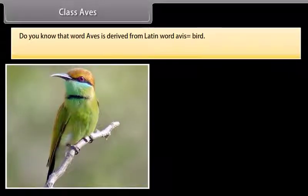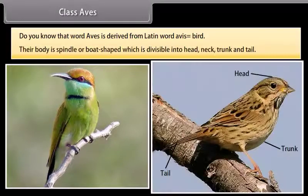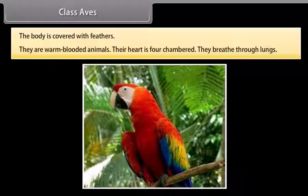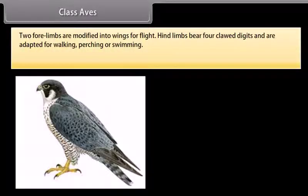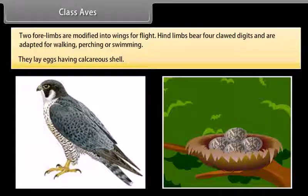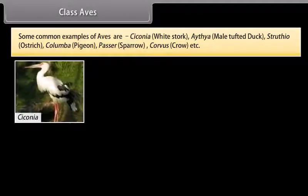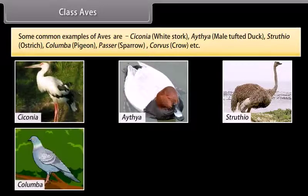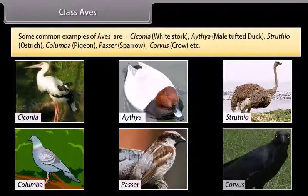Class Aves. The word Aves is derived from Latin word avis, meaning bird. Their body is spindle or boat-shaped, divisible into head, neck, trunk, and tail. The body is covered with feathers. They are warm-blooded animals. Their heart is four-chambered. They breathe through lungs. Two forelimbs are modified into wings for flight; hind limbs bear four clawed digits adapted for walking, perching, or swimming. They lay eggs having a calcareous shell. Some common examples are Ciconia (white stork), Anas (duck), Struthio (ostrich), Columba (pigeon), Passer (sparrow), and Corvus (crow).